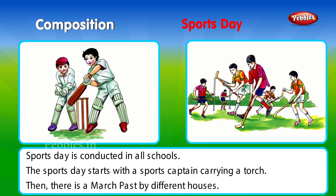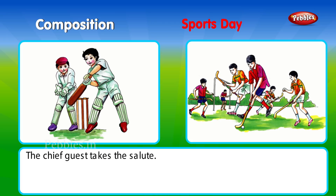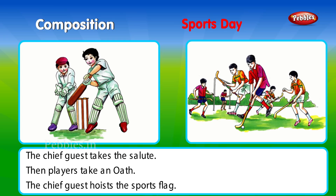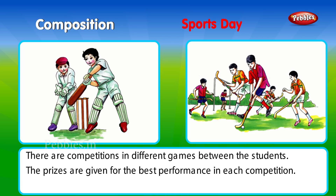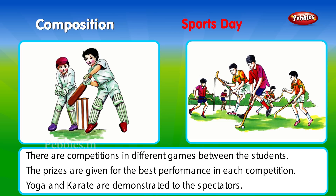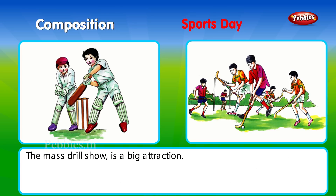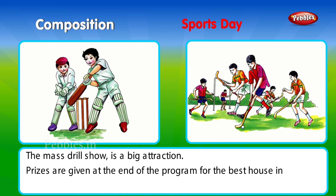The sports day starts with a sports captain carrying a torch. Then there is a march past by different houses. The chief guest takes the salute. Then players take an oath. The chief guest hoists the sports flag. There are competitions in different games between the students. The prizes are given for the best performance in each competition. Yoga and karate are demonstrated to the spectators. The mass drill show is a big attraction. Prizes are given at the end of the program for the best house in the games and for the march past.